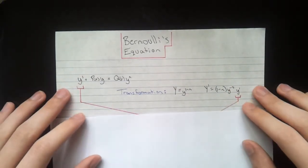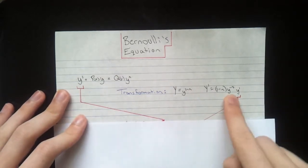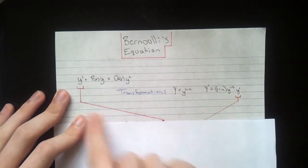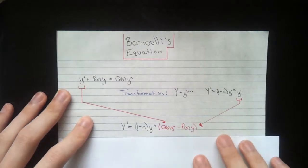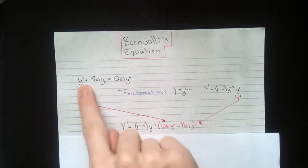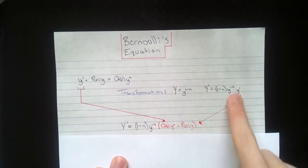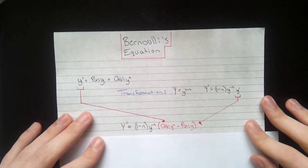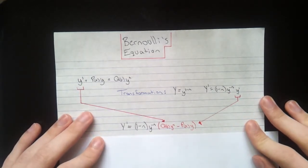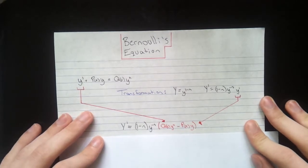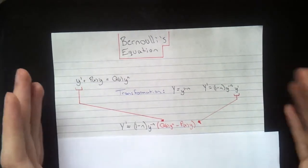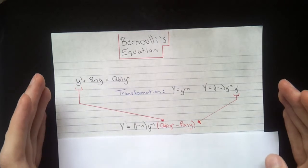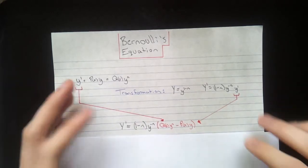So first thing we're going to do is we're going to take this equation here and we're going to sub this y with this y. So you get this. You just rearrange this equation a little bit and sub it into this one, so you get that. Big y prime equals 1 minus n times y to the negative n, all times q at x times y to the n minus p at x times y.